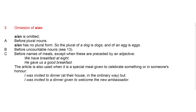When we omit A or AN, we do this before plural nouns. A or AN have no plural form. The plural of 'a dog' is simply 'dogs'; 'an egg' becomes 'eggs'. We do not say 'an eggs' or 'a dogs' — that is not grammatically correct.